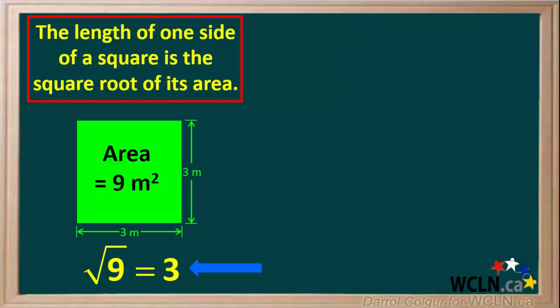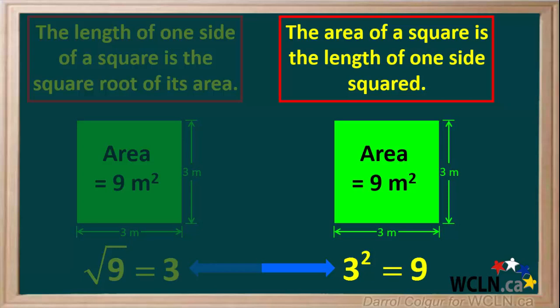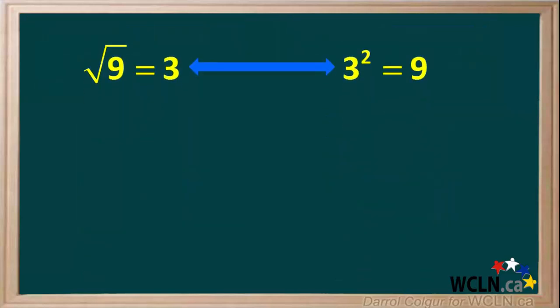So the square root of 9 is equal to 3, and 3 squared is equal to 9. Looking at these two statements, we can say that they're opposites of each other. We can also say that the square root of 9 is equal to 3, because 3 squared is equal to 9.